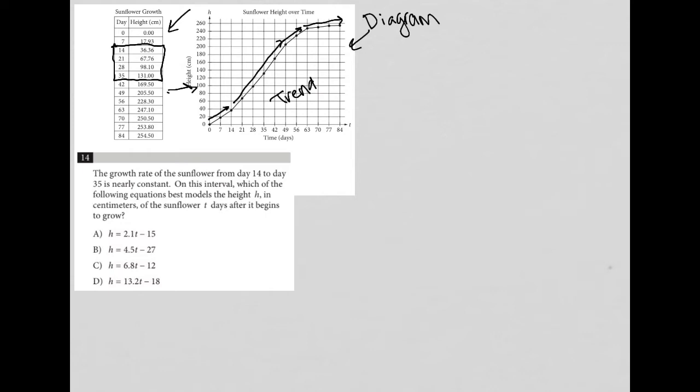On this interval, which of the following equations best models the height h in centimeters of the sunflower t days after it begins? From day 14 to day 35, that does actually look pretty constant on the graph. Let's get rid of all the other stuff that doesn't matter for us right now.